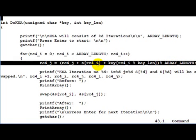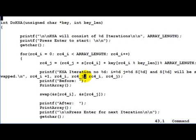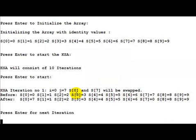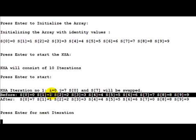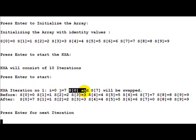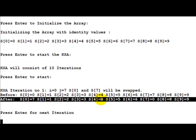This is exactly the same statement as in the pseudo code from the presentation. After calculating j, the simulation prints the values of i and j, and which elements s[i] and s[j] will be swapped. Before the first iteration the array is in identity state - s[0]=0, s[1]=1, ..., s[9]=9. After running iteration 1, s[0] and s[7] are swapped: s[0] becomes 7 and s[7] becomes 0. The rest of the values remain the same.